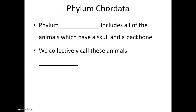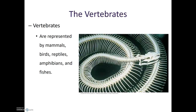The final phylum that we'll be talking about as we discuss the diversity of life is phylum Chordata. This includes all animals which have a skull and a backbone. We collectively call these animals vertebrates, and they are represented by mammals, birds, reptiles, amphibians, and fish.